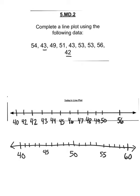Now I'm just going to put each value on my line plot and cross it out once I've put it on my line plot so I don't count it twice. So 54, put an X. 43, X. 49, X. 51, X. 43, again. Got it. 53, here. Another 53, here. 56, and 42. Okay. And that's it. I can't label my X-axis because I don't know what this data represents. So I can't put a label on there. And that's it. That's my six problems.